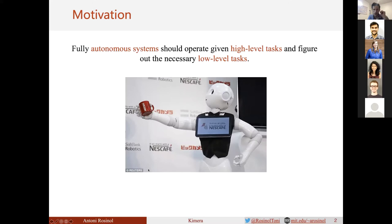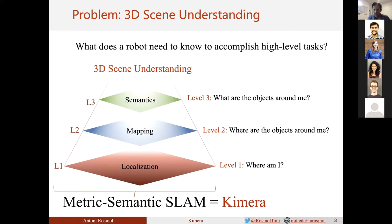The motivation for this work is to have fully autonomous robots that can achieve tasks given as human commands, such as asking a robot to bring us a cup of coffee. What does a robot need to know to accomplish this? It needs to know where it is in the world—localization is at the base of this pyramid. It also needs to know the geometry of the 3D scene surrounding it, so the second element is mapping.